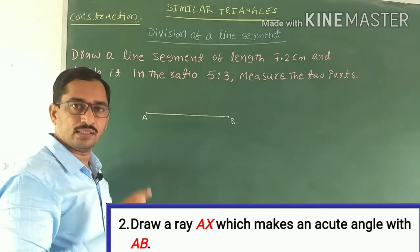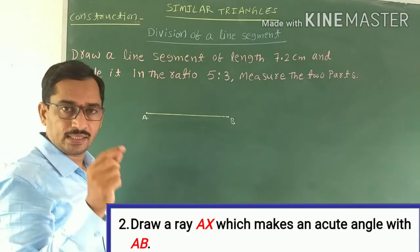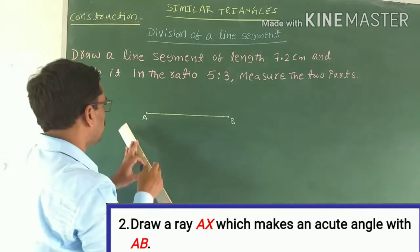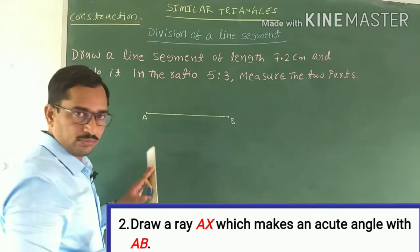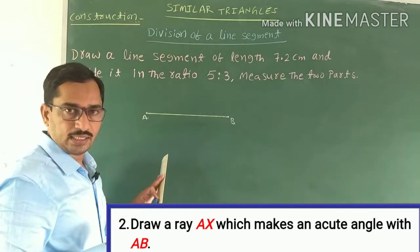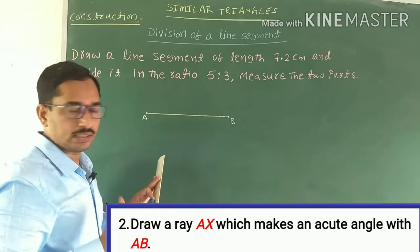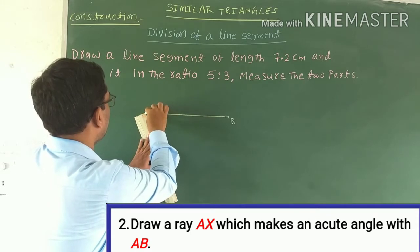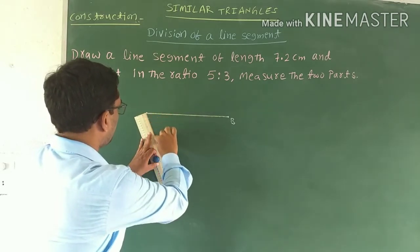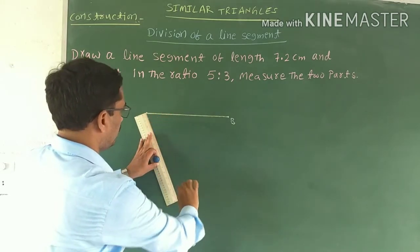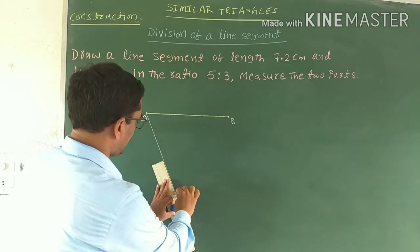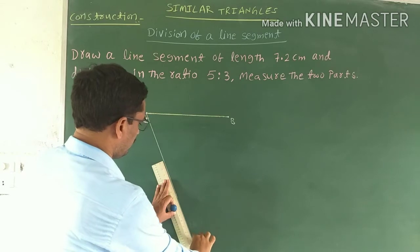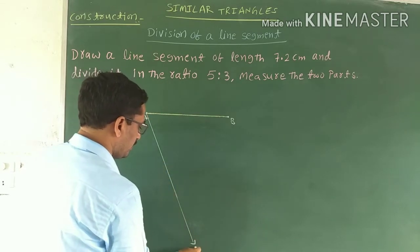Draw a ray which makes an acute angle with line segment AB. No need to measure the angle, but it must be an acute angle. Acute angle means between 0 and 90 degrees — not more than 90. Draw ray AX which makes an acute angle with AB and denote it AX.